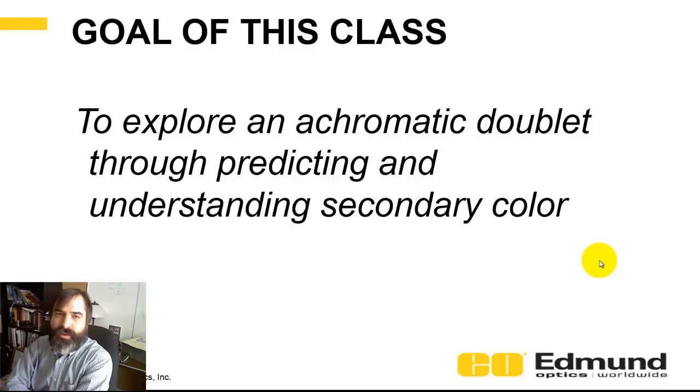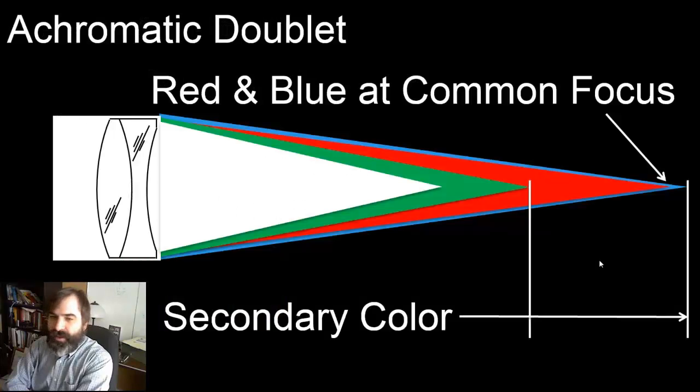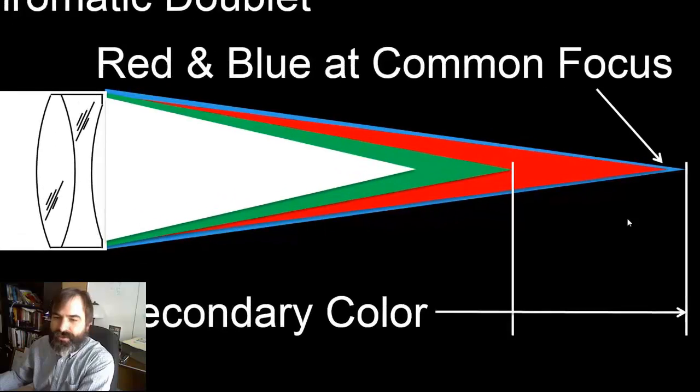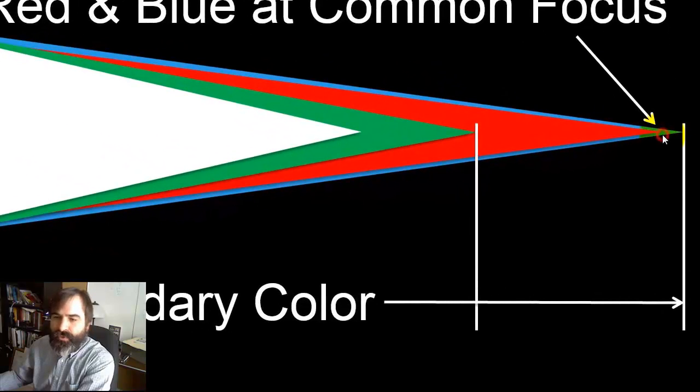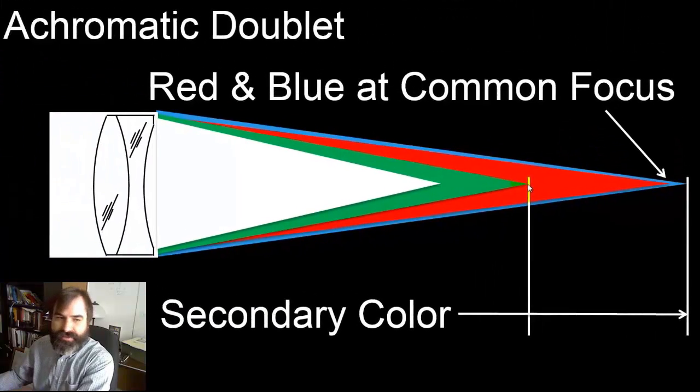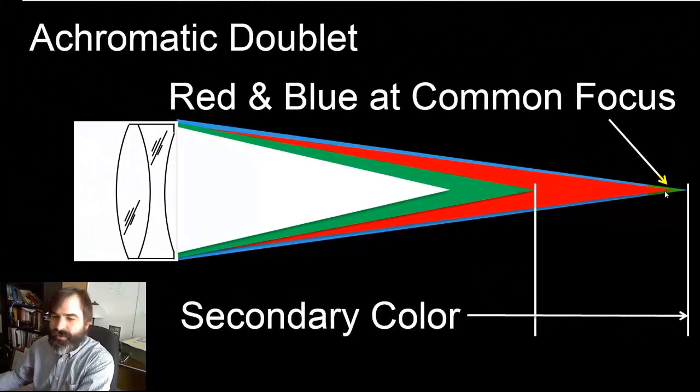We're simply going to talk about the theory of secondary color, what it is, and how to predict it, and some other new glass material property. Here's a nice infographic on what secondary color is. Recall in an achromat, you take your two wavelength extremes and you put the focus on top of each other. In this case, you're doing red and blue. And then the center wavelength, in the visible, would be green. The distance, the axial distance, the distance along the optical axis, that is the secondary color.